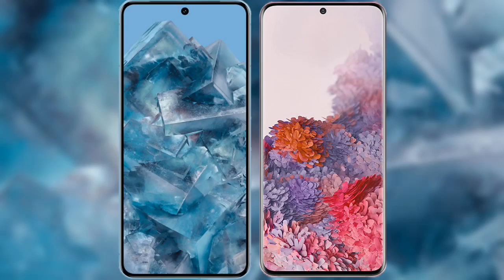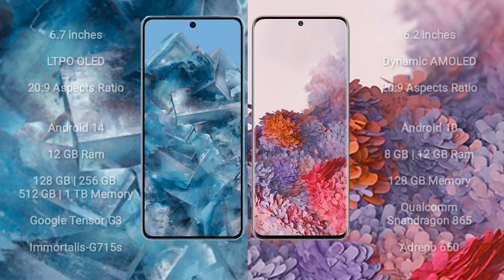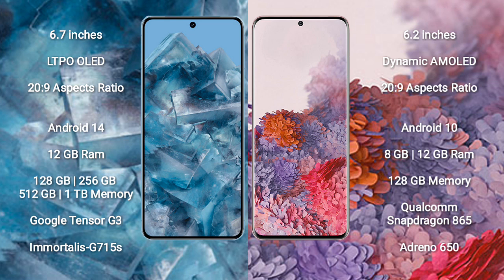I will compare the new Google Pixel 8 Pro with Samsung Galaxy S20. Google Pixel 8 Pro comes with a 6.7-inch LTPO OLED display, and Samsung Galaxy S20 comes with a 6.2-inch Dynamic AMOLED display.